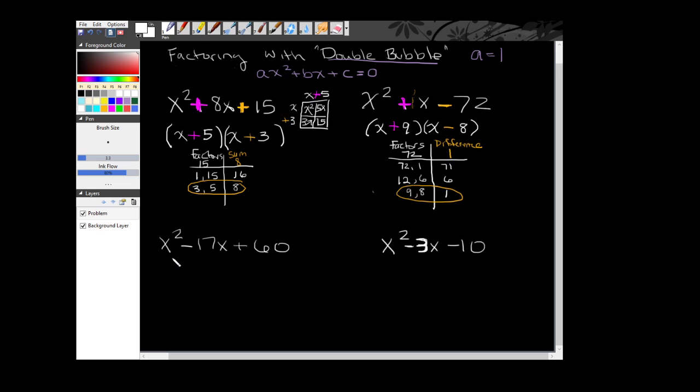So now for this third example, set up my double bubble. I know that to get an x squared, I need an x times an x. My first sign here is a minus, which falls down, so my bigger factor will be negative.